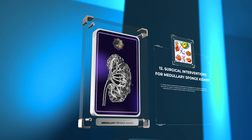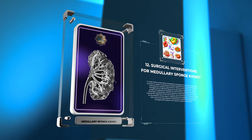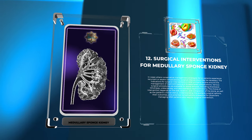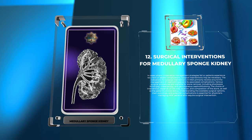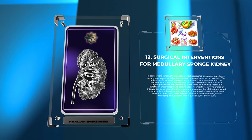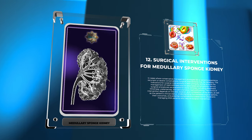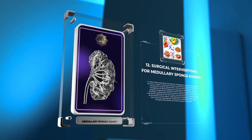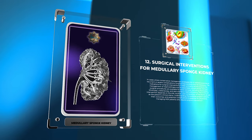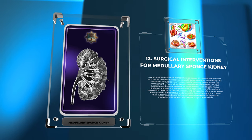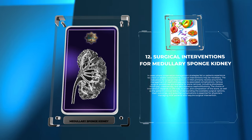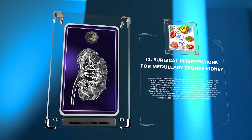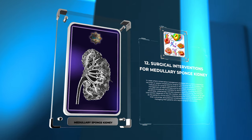In cases where conservative management strategies fail or patients experience recurrent or severe complications, surgical interventions may be necessary. The indications for surgical interventions in MSK primarily revolve around the management of nephrolithiasis and its associated complications. Various surgical procedures are available for stone removal, including shockwave lithotripsy, ureteroscopy, and percutaneous nephrolithotomy. The choice of intervention depends on the size, location, and composition of the stone, as well as the patient's clinical status. Understanding the available surgical options, their outcomes, and potential complications is essential for physicians managing MSK patients.